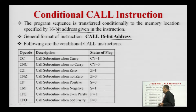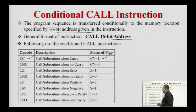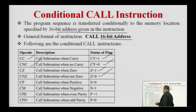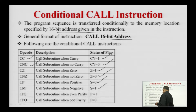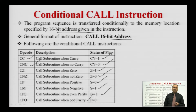On the basis of the flags, we have the following conditional CALL instructions: CC — call subroutine when carry flag is set (carry flag = 1); CNC — call subroutine when carry flag is reset; CZ — call subroutine when zero flag is set; CNZ — call subroutine when zero flag is reset; CP — call subroutine when the number is positive (sign flag = 0); CM — call subroutine when the number is negative (sign flag is set); CPE — call subroutine when parity is even (parity flag is set); CPO — call subroutine when parity is odd (parity flag = 0).